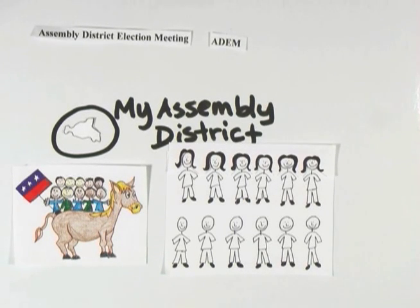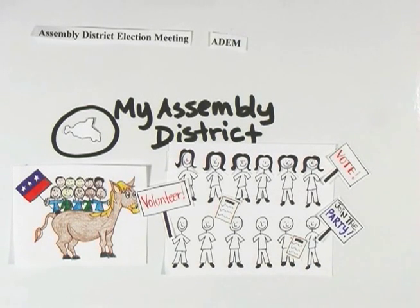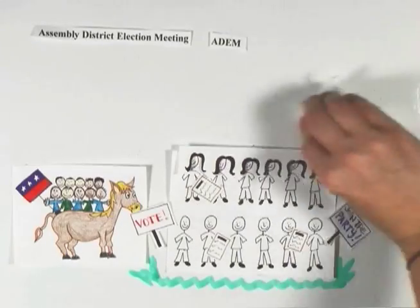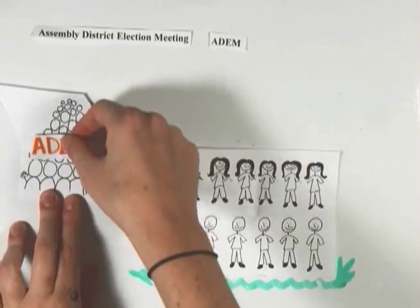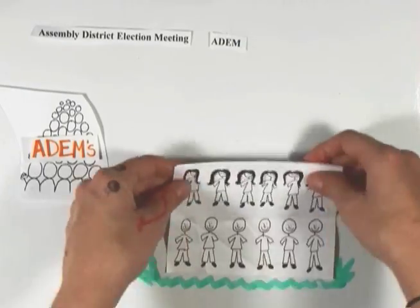The delegates elected at the ADEM are often among the most active Democratic volunteers in their district. Many consider the assembly district delegates, along with delegates from the county committees, to be representatives of the grassroots volunteer base of the party.